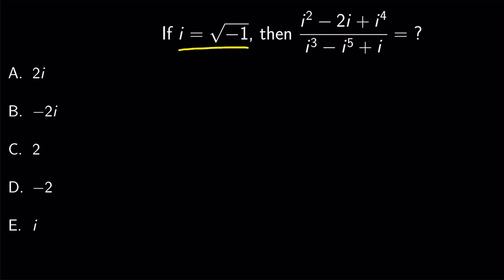If i equals the square root of minus 1, then simplify the following expression. You see we have i to the power of 2, 4, 3, and 5. So let's calculate these powers.